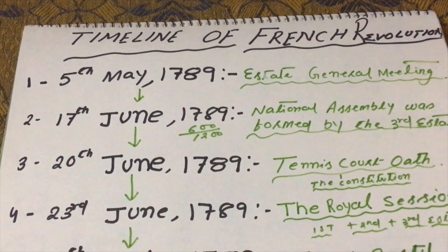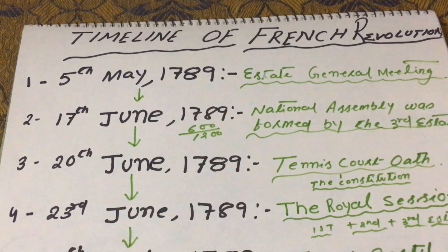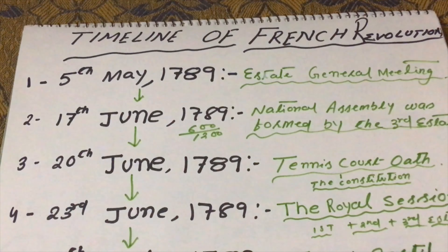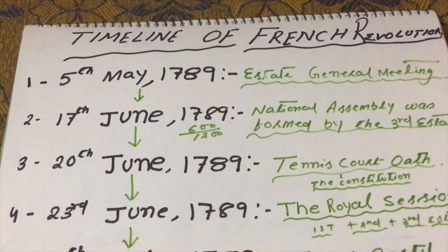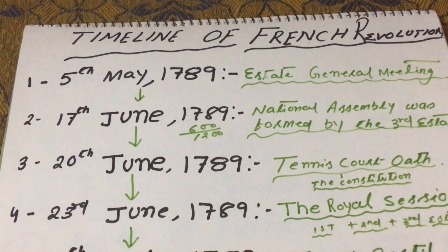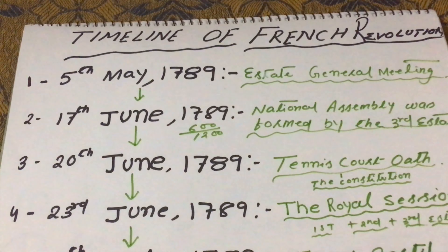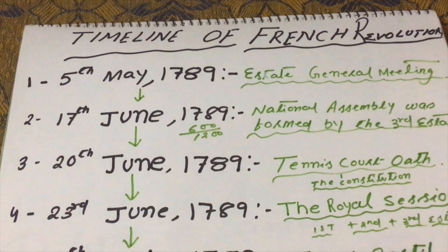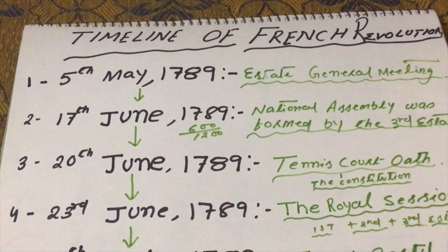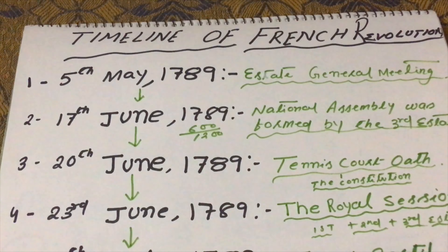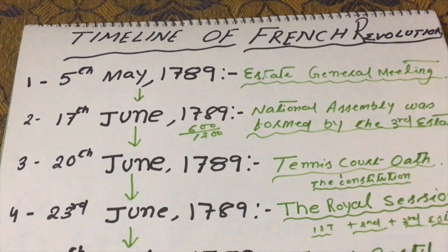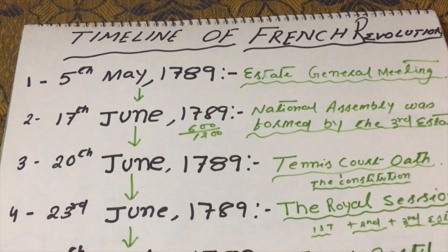Always in this meeting, the nobles and clergy were in the majority, so whatever they said, the people accepted it — the third state was always accepting their decisions. But now, on 5th May 1789, the commoners found themselves in the majority in this meeting. This is the important difference to be noted.